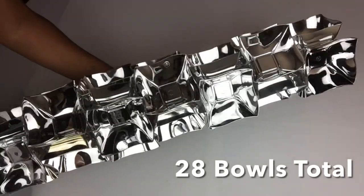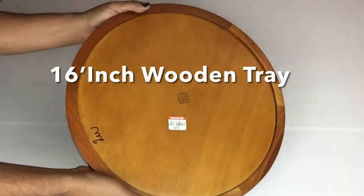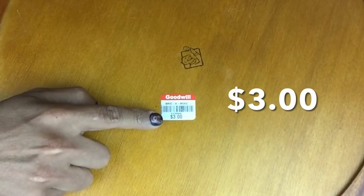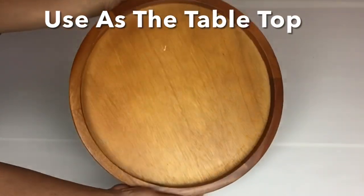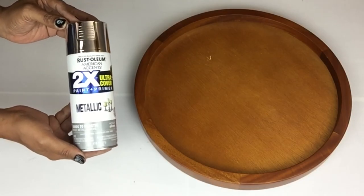I used 28 bowls total. I purchased this 16-inch wooden tray from my local Goodwill for three dollars and I'll be using this as my table top. Then I took it to a well-ventilated area and spray painted two coats of metallic silver.